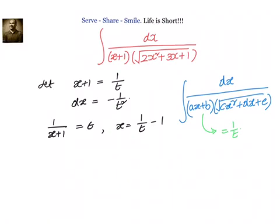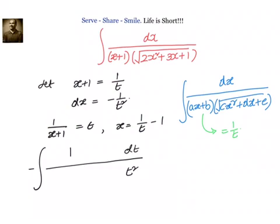We will have the integral of dx. Let us write it in terms of dt. Instead of dx we can write down minus 1 by t squared into dt. And 1 by (x plus 1) we know is equal to t.